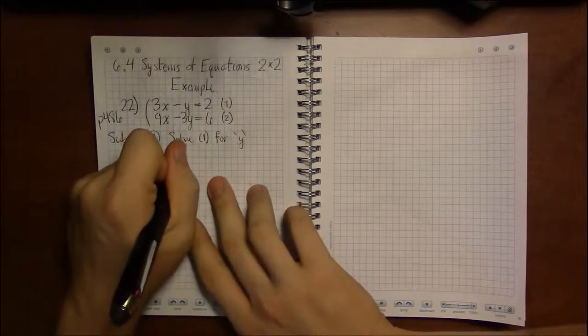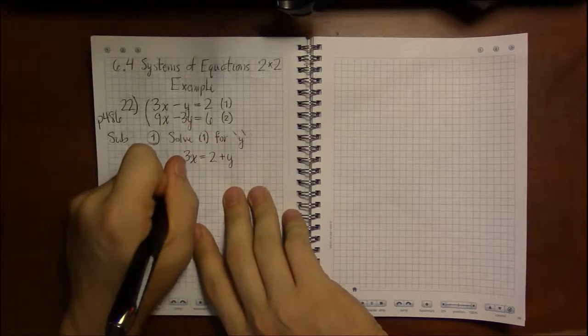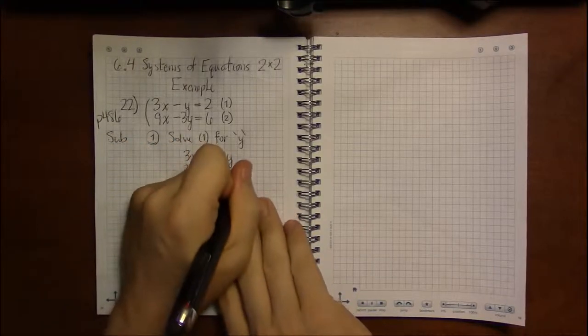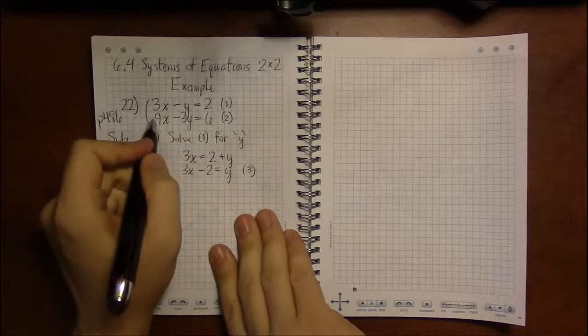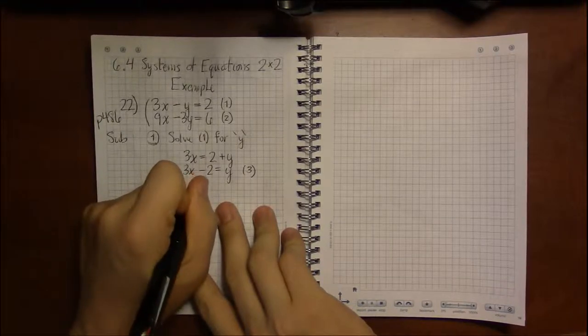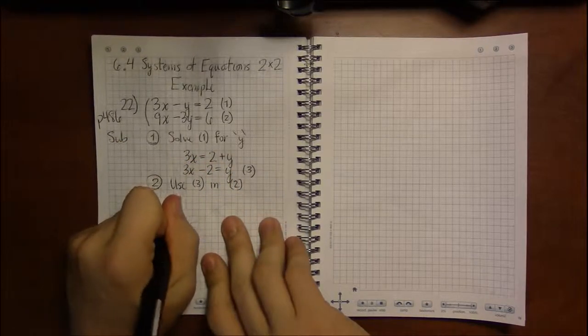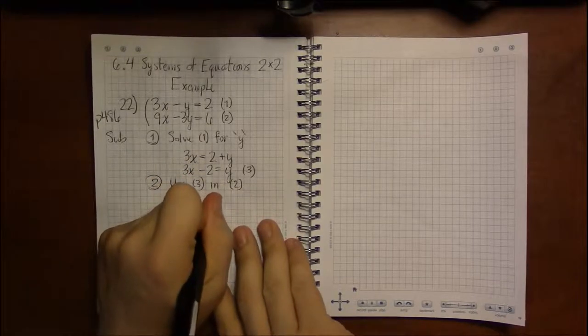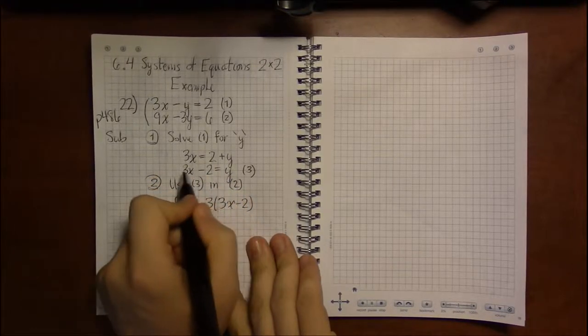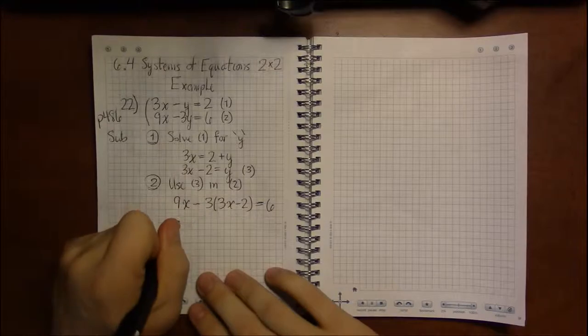So to do that I'm going to have to add y to both sides and then subtract 2. So 3x - 2 = y. This is my new equation and the one I didn't use I'll use now in step 2. So I now have y in terms of x. That'll allow me to get an equation that just involves x's, there'll be no y's in sight doing this substitution.